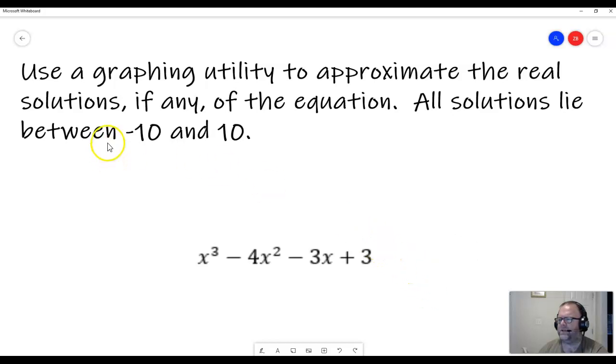Looking at the problem here, it says use a graphing utility to approximate the real solutions, if any, of the equation. All solutions lie between negative 10 and positive 10. And they tell us this here, that it's between negative 10 and positive 10. So that way we can set the window of our calculator to just go from negative 10 to positive 10, and that will make sure that we're not missing any of these solutions and we don't have a lot of extra space as well.